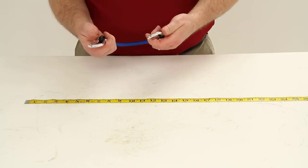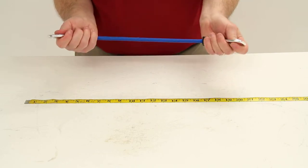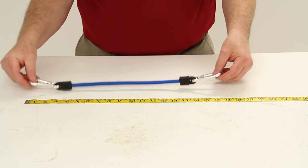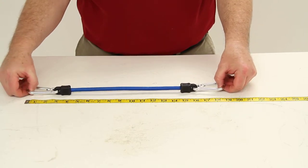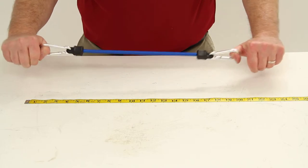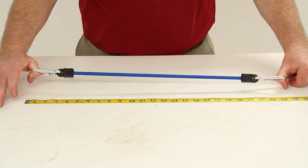It lets you secure your cargo for towing and hauling. This blue cord overall length is 18 inches. The maximum stretch length on it is 24 inches.